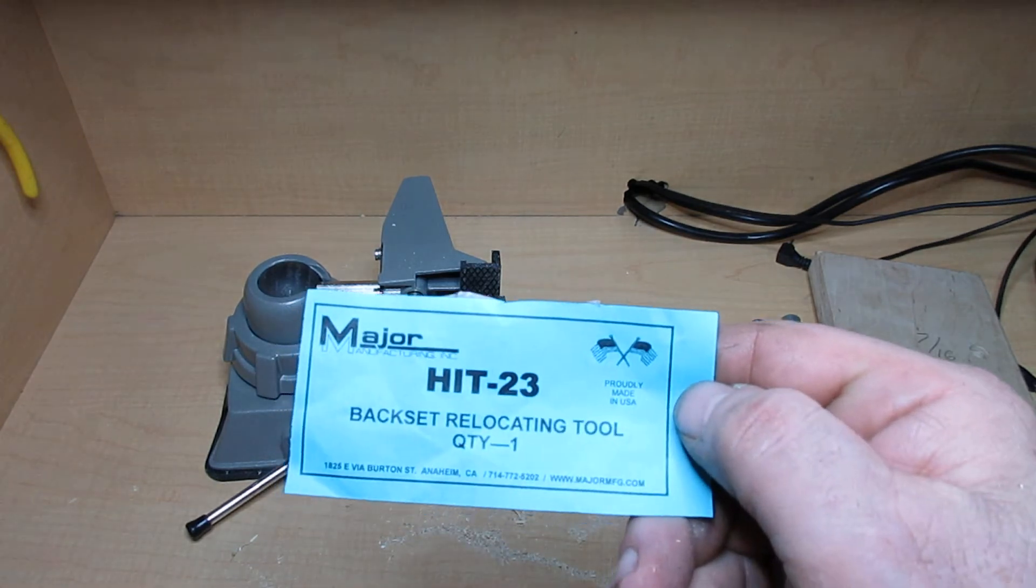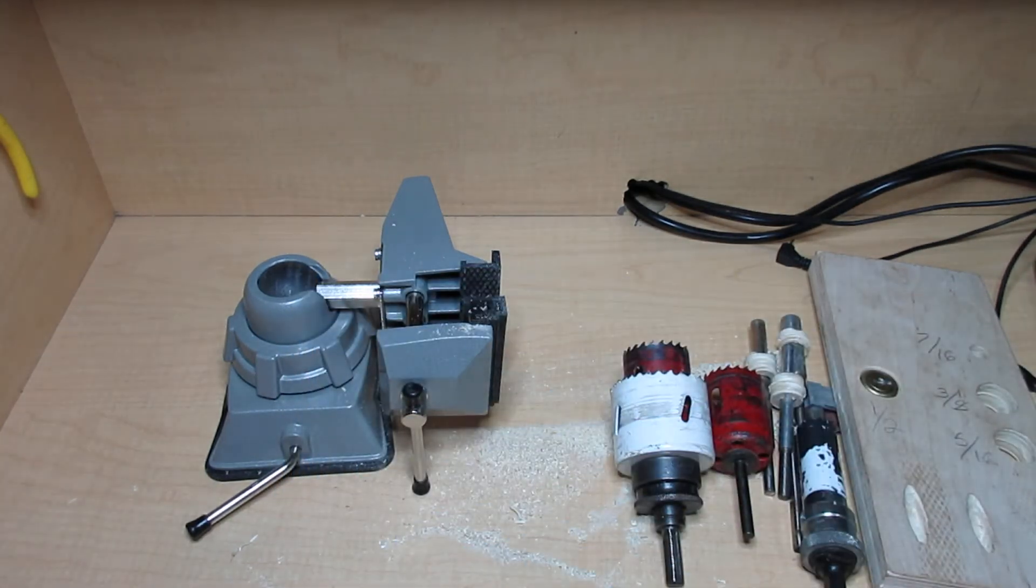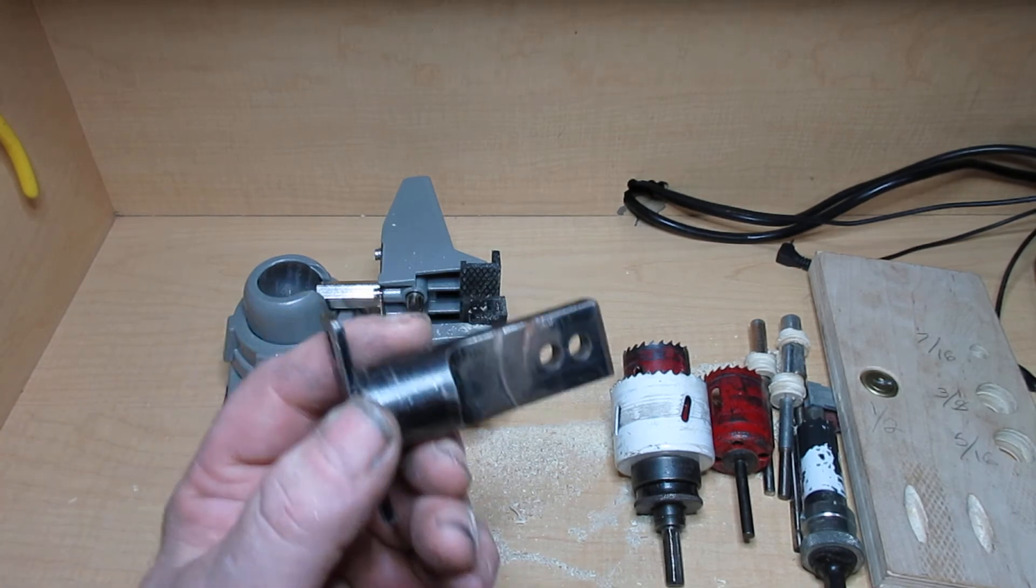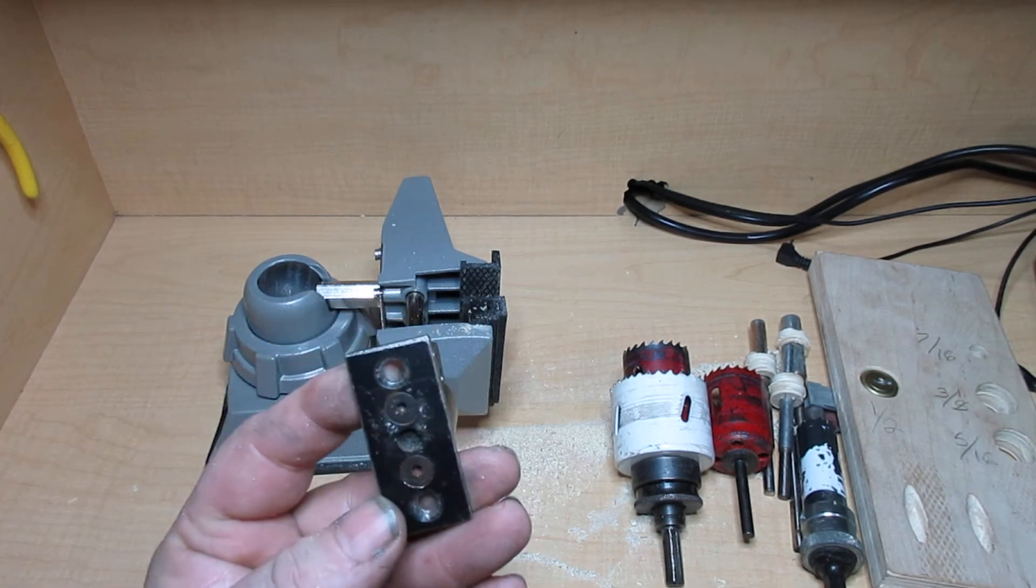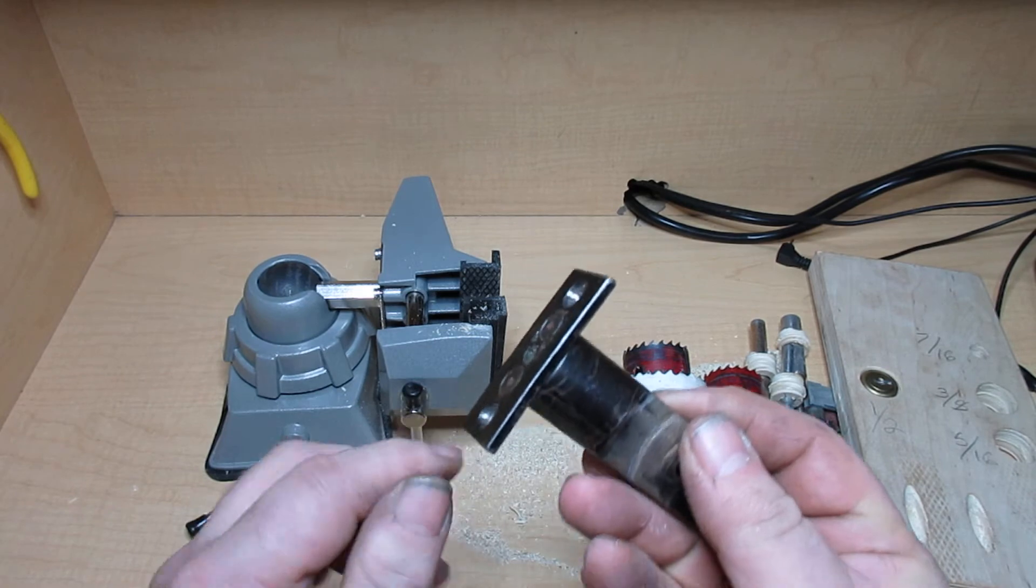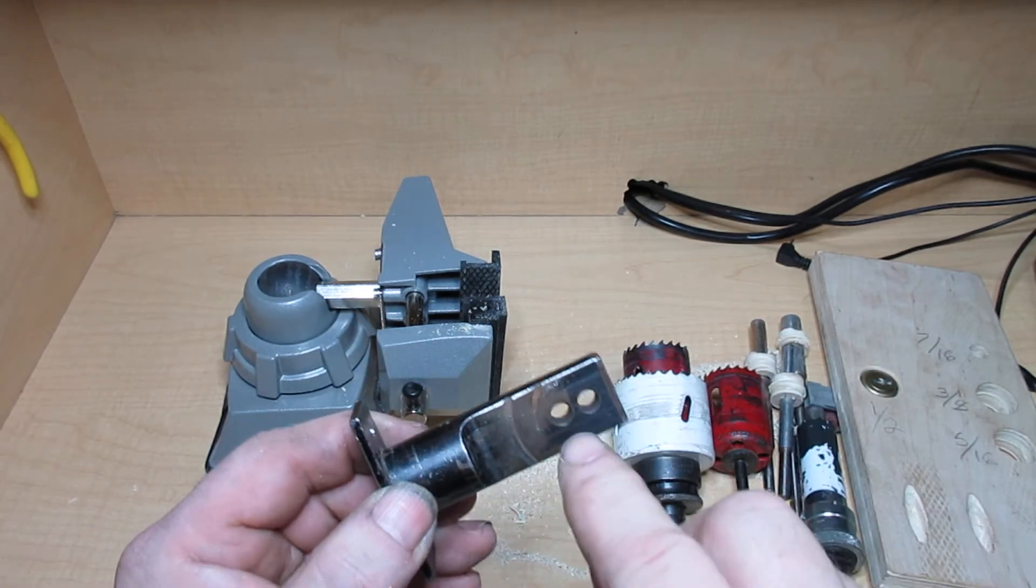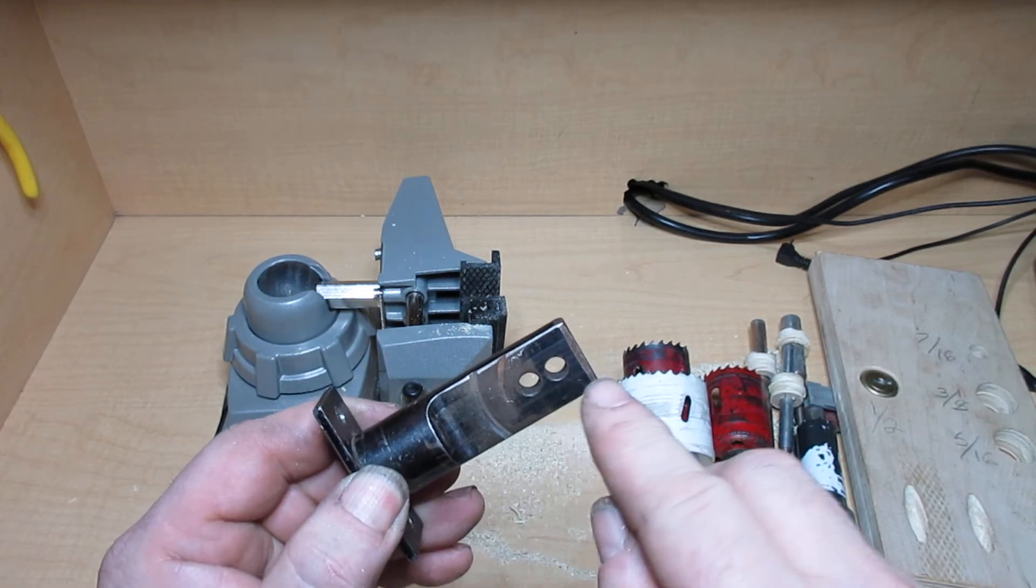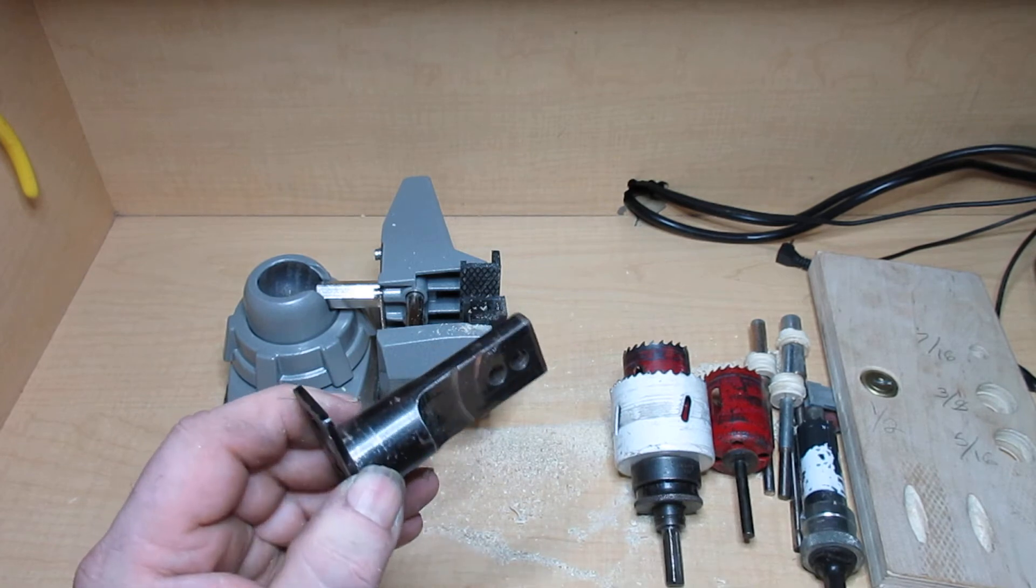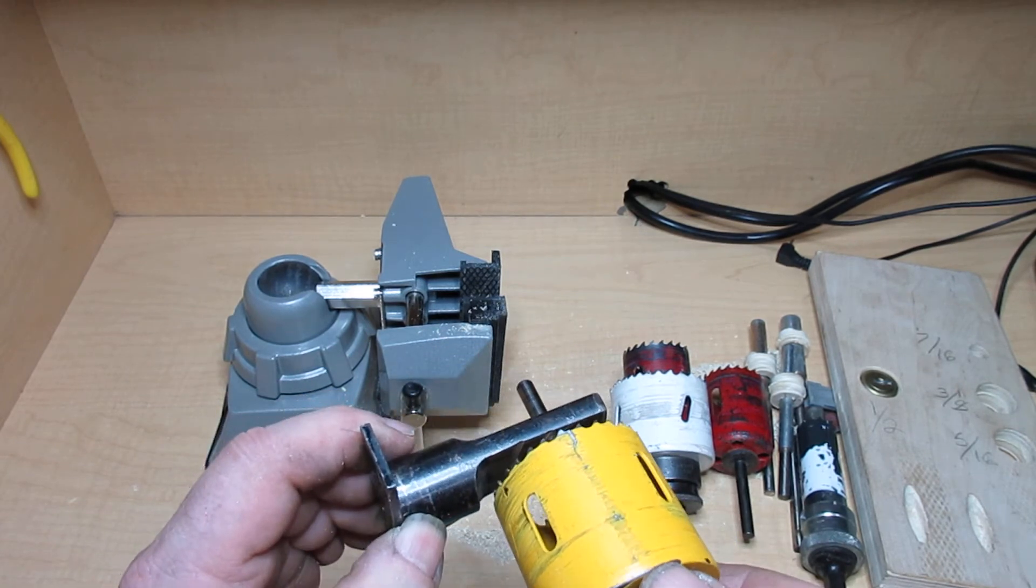So basically it's this system here. And what it is, it's like a deadbolt. You screw it in, you have to mortise your door, and then they have a two and three-eighths back set and two and three-quarter back set.